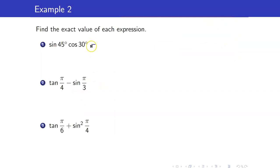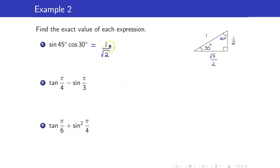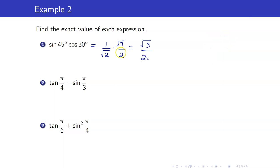Let us evaluate the following expression. Sine of 45 degrees is 1 over square root of 2. What is cosine of 30? This is square root of 3 over 2. So therefore, this is square root of 3 over 2 square root of 2.